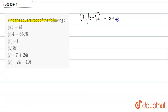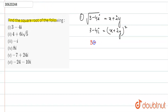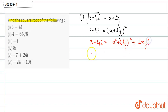Let this equal x plus iy. If I do squaring on both sides, that is: 3 minus 4i is equal to (x plus iy) whole square. So here, 3 minus 4i is equal to x squared minus y squared plus 2xyi.